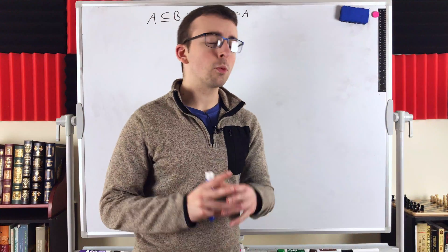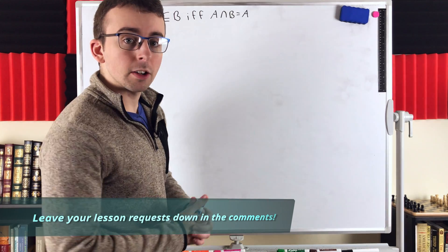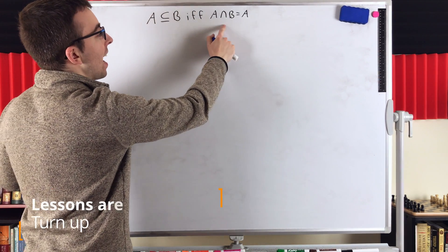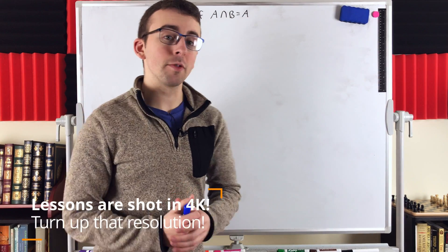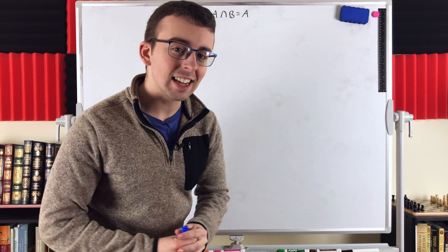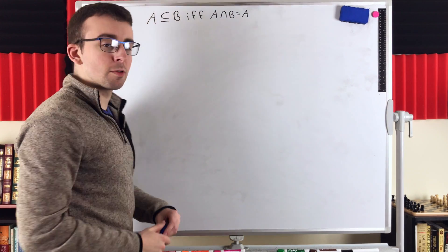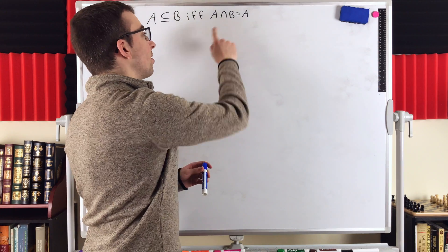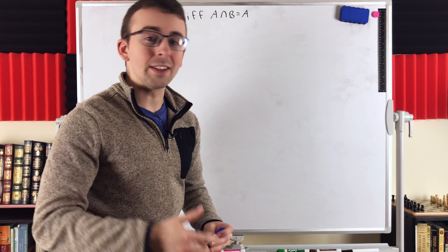Hey everyone, in today's Wrath of Math lesson, we're proving a pretty straightforward set theory result: that if A and B are two sets, then A is a subset of B if and only if A intersect B is equal to A. I recently did a lesson proving a very similar result involving the union of A and B instead of the intersection. I recommend giving this proof a try, and then seeing if you can figure out what that similar result is for set union. I'll leave a link in the description.